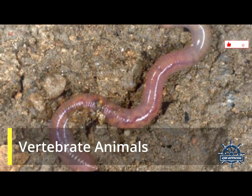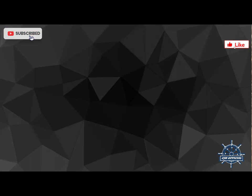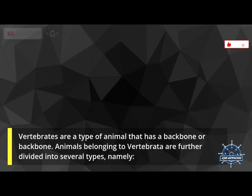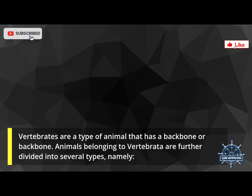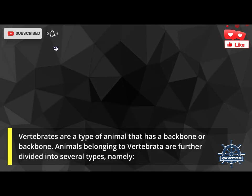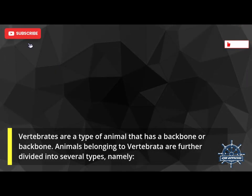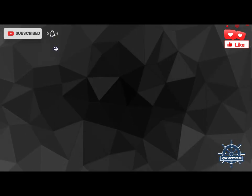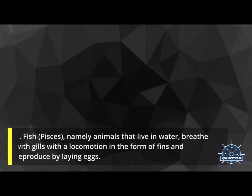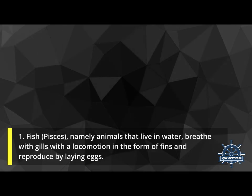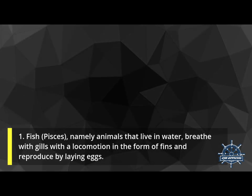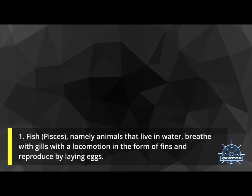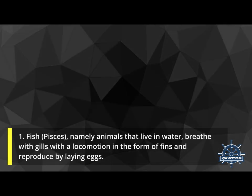Vertebrate animals are a type of animal that has a backbone. Animals belonging to vertebrates are further divided into several types. First, fish — animals that live in water, breathe with gills, use fins for locomotion, and reproduce by laying eggs.